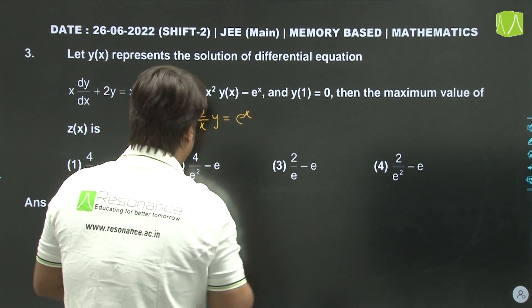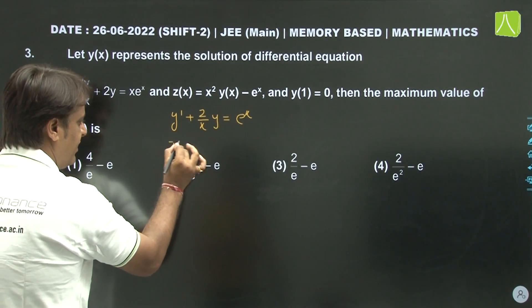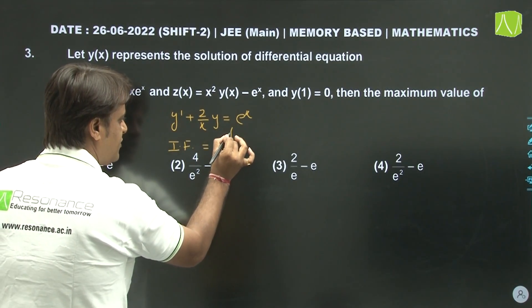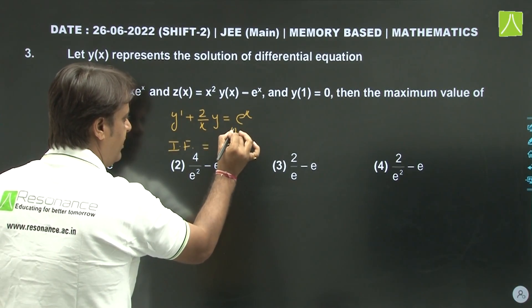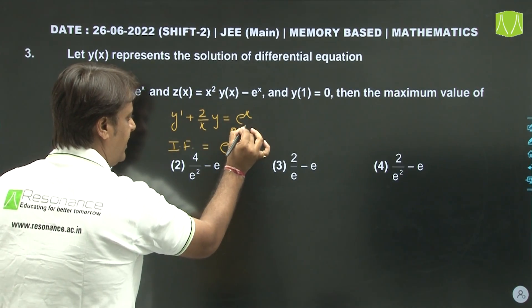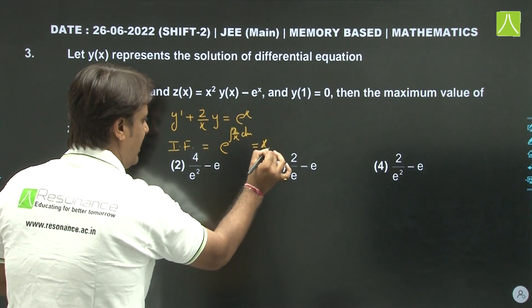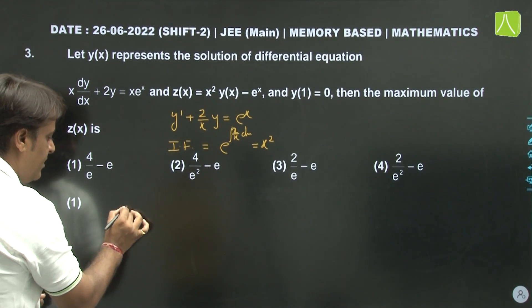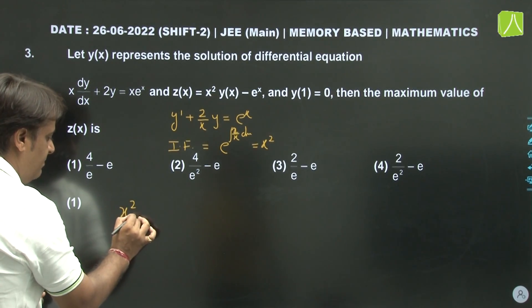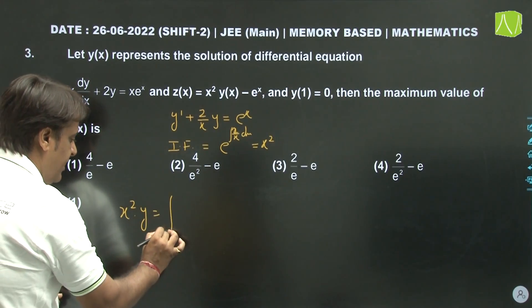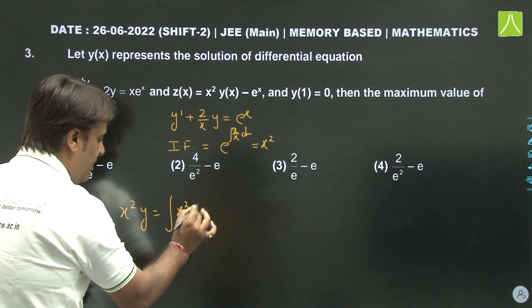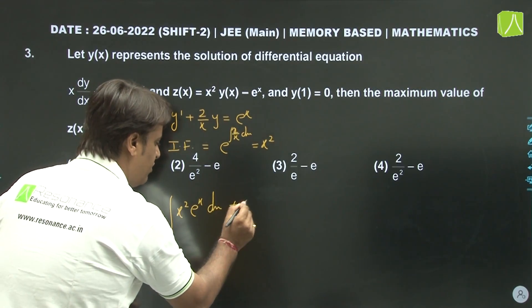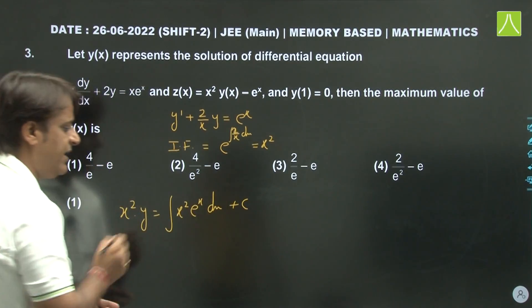We calculate the integrating factor: e^(∫2/x dx) = e^(2 ln x) = x². So the solution is x² × y = ∫x² eˣ dx plus constant of integration.